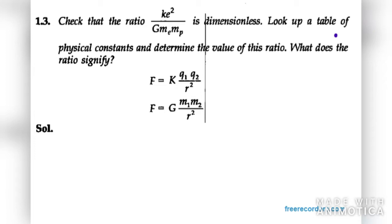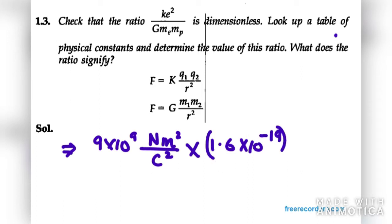So let's put the value of all and check whether this quantity is dimensionless or not. Value for K is 9 into 10 raised to power 9 Newton meter square per coulomb square, into e square. E square is charge, that is 1.6 into 10 raised to power minus 19 coulombs square.